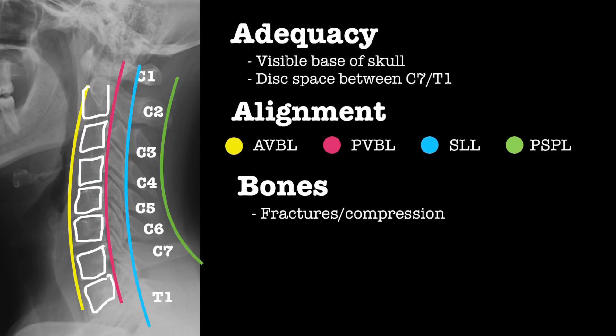B is for bones. Look for symmetry and chase the vertebral bodies looking for fractures. If there's asymmetry, this is likely caused by compression. If the compression is greater than 40%, there's likely a burst fracture, whilst anterior compression may be caused by a teardrop-shaped fracture.